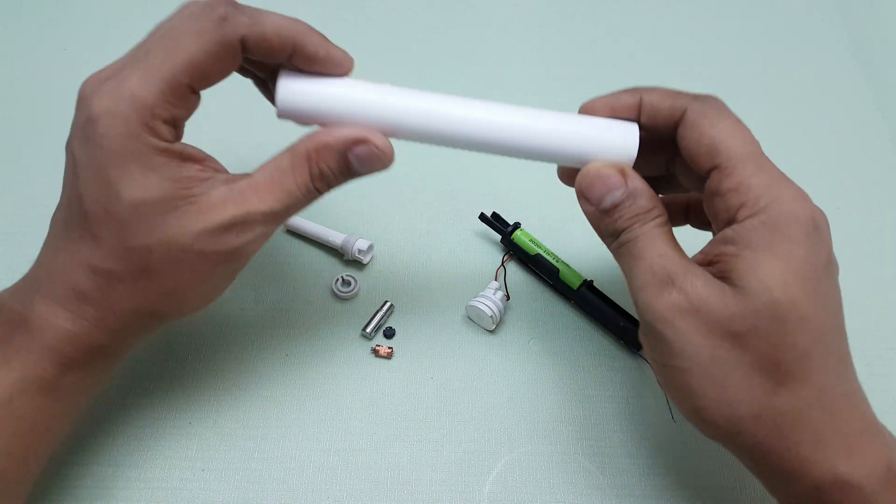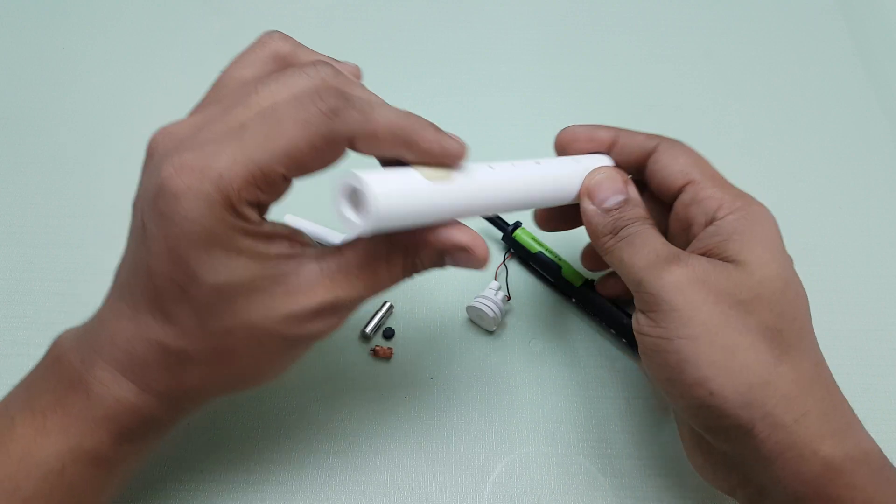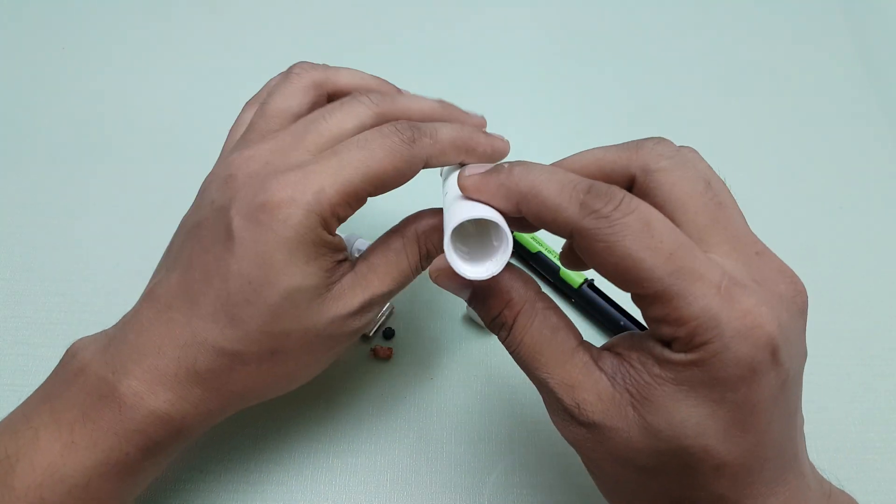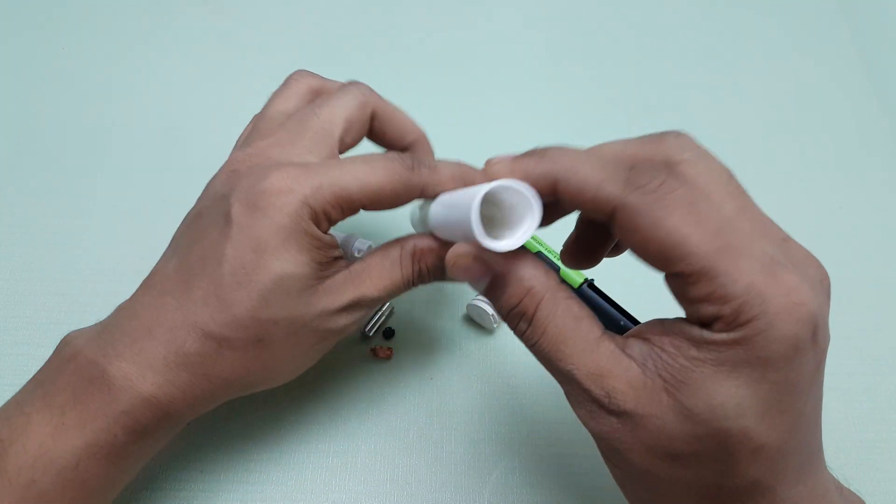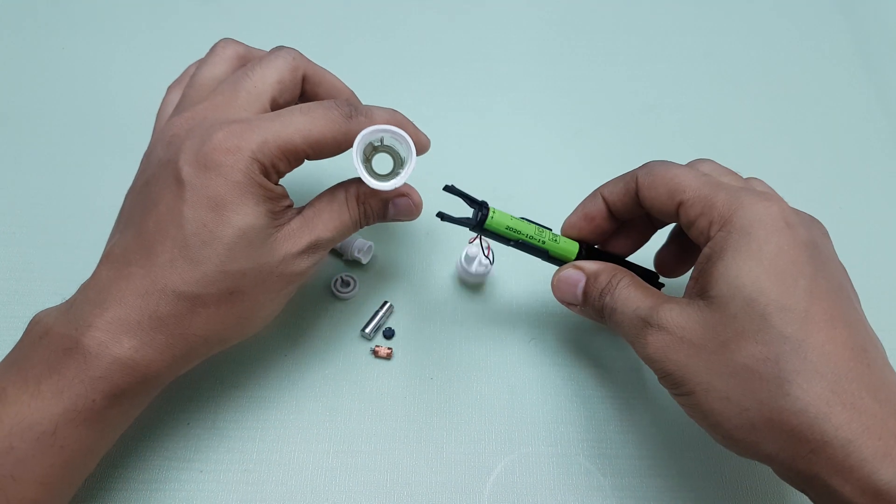You've seen the disassembly process, now let's talk about what happened in the video and the rest of the things. So basically, this is the tube in which the entire mechanism goes in.